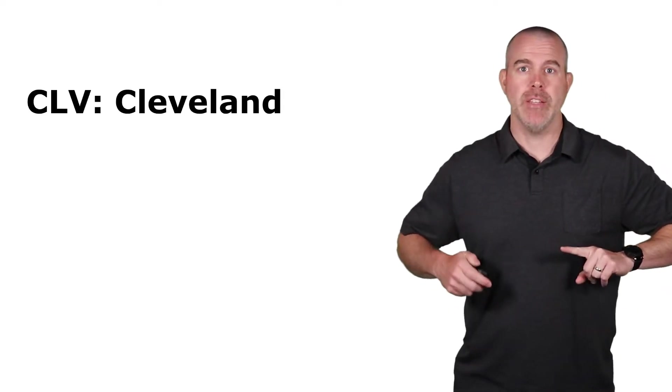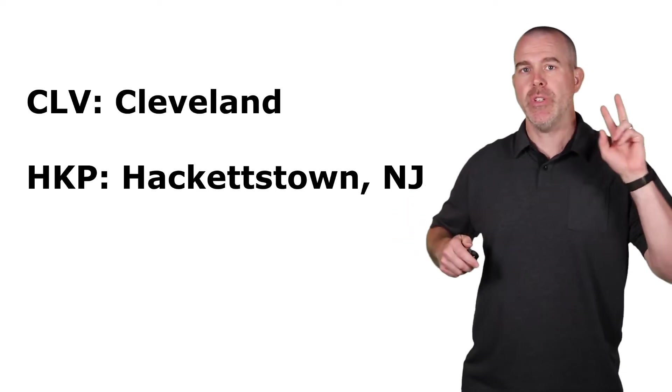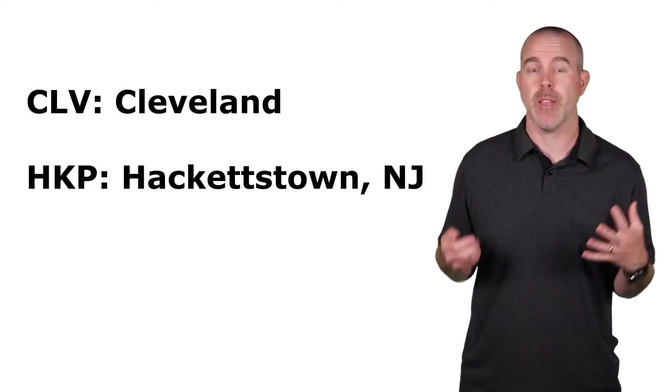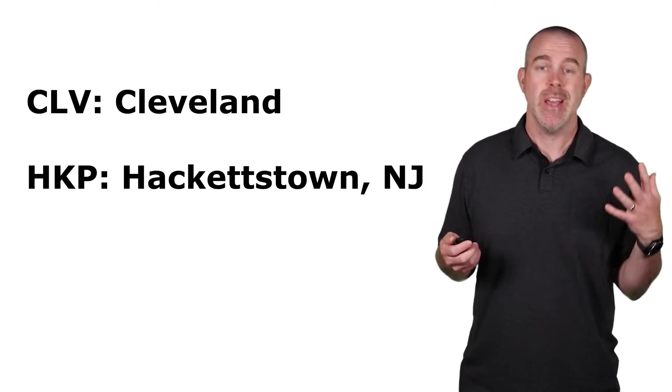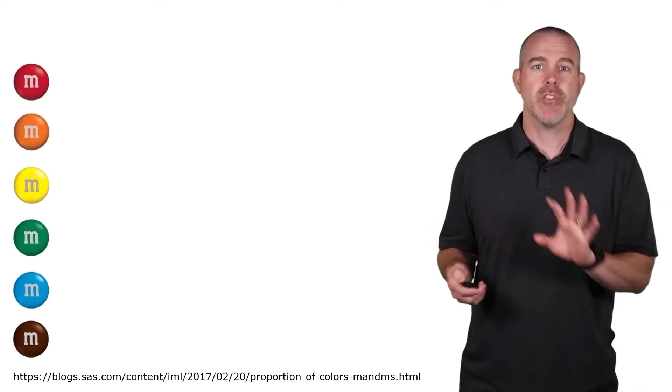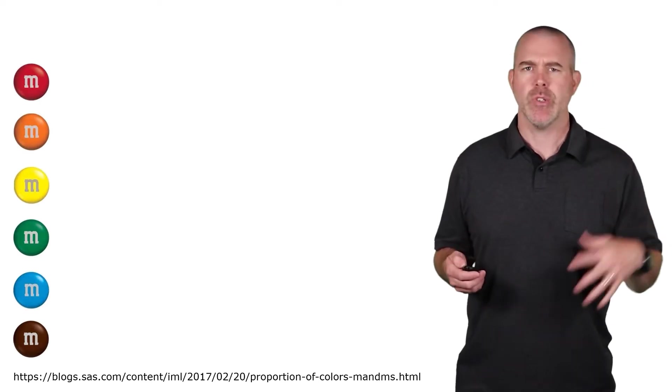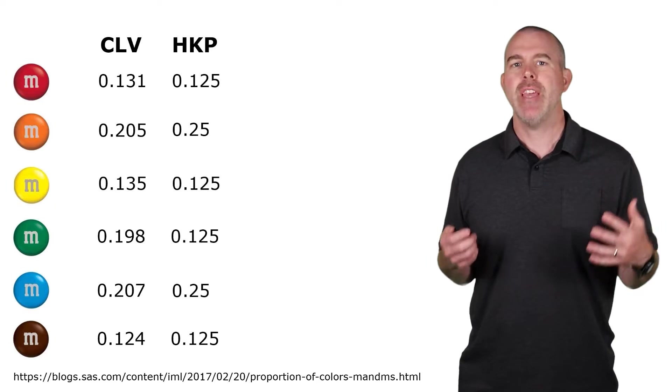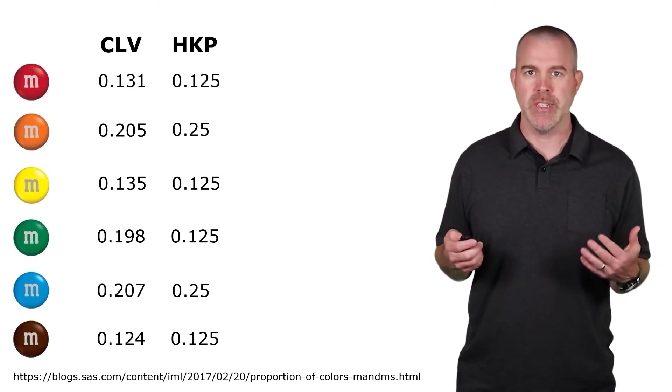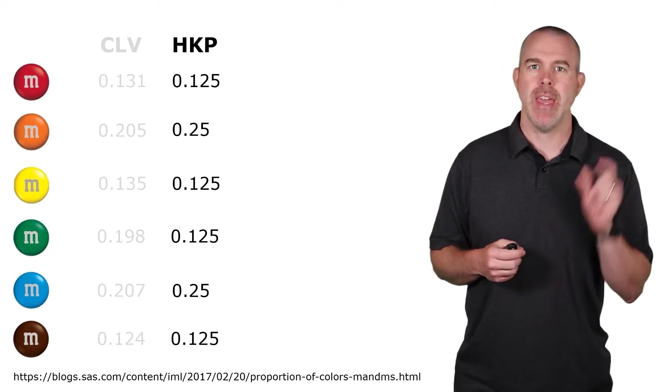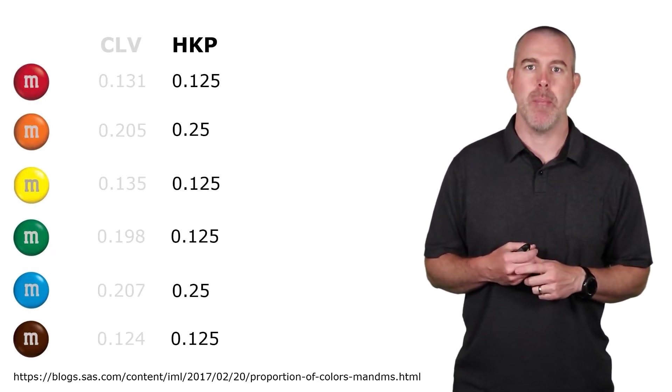Alright, I have one other detail I forgot to mention now that we're back in the studio. So, there are two different plants that make these M&Ms. And apparently, the story is that the proportion, the color distribution, depends on which plant. There's an old blog from the statistics company SAS. They have these two different sets of proportions. The M&M package that I looked at happens to be from the HKP. It has HKP stamped on the bag.